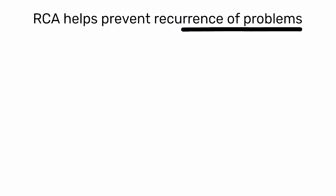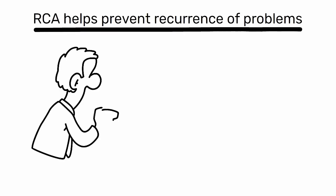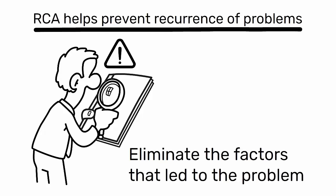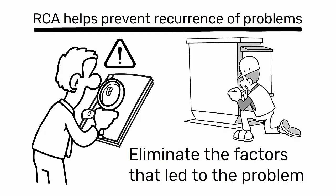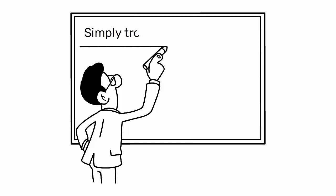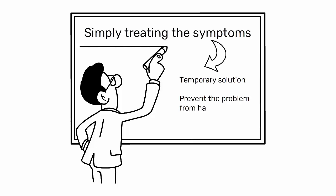Firstly, RCA helps prevent recurrence of problems. By identifying and addressing the root cause, you eliminate the factors that led to the problem, reducing the likelihood of its recurrence. This is more effective than simply treating the symptoms, which may provide a temporary solution but does not prevent the problem from happening again.